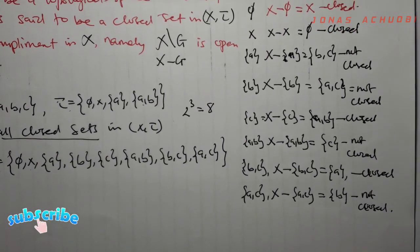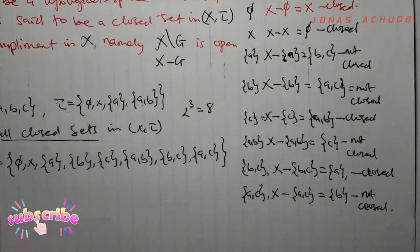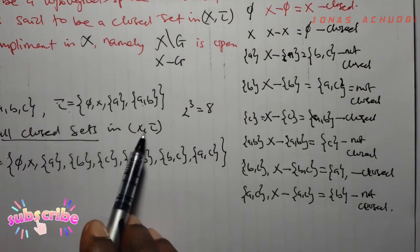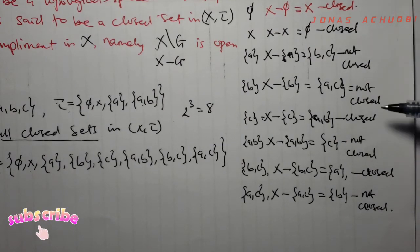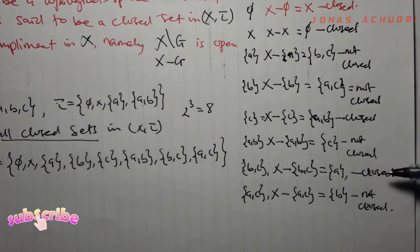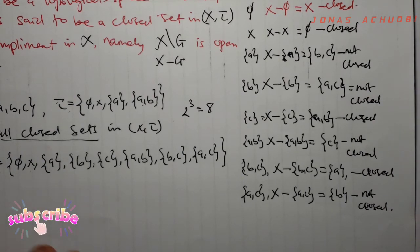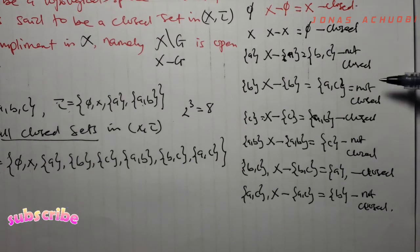So of all eight subsets of the topological space (X, tau), we have four closed sets and four sets that are not closed. Take note: the fact that they are not closed does not mean that they are open.